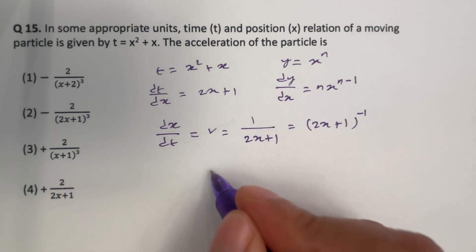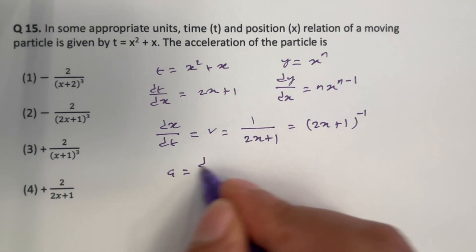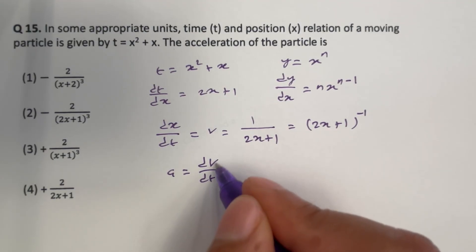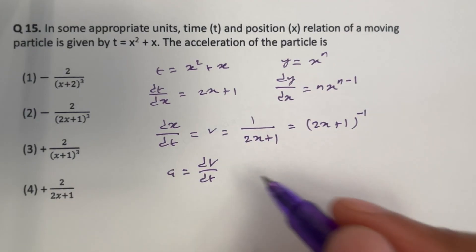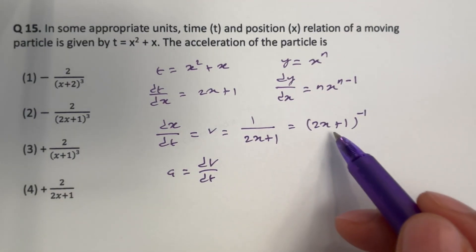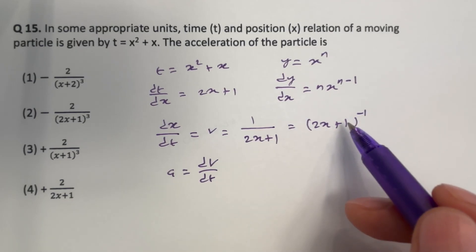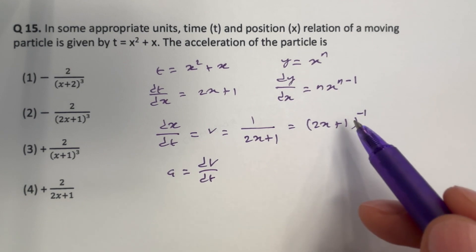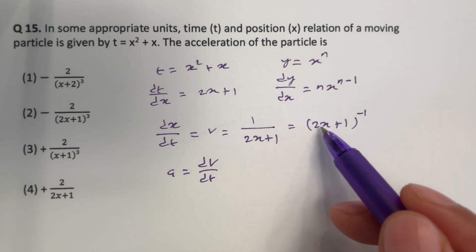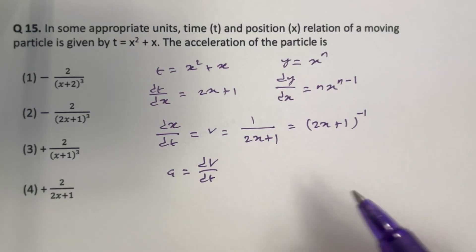Now, acceleration is dv by dt — rate of change of velocity with respect to unit time is acceleration. However, we cannot differentiate with respect to t because there is no t term here. We have a function v which we can differentiate with respect to x but not with respect to t. Therefore, we have to use the chain rule.